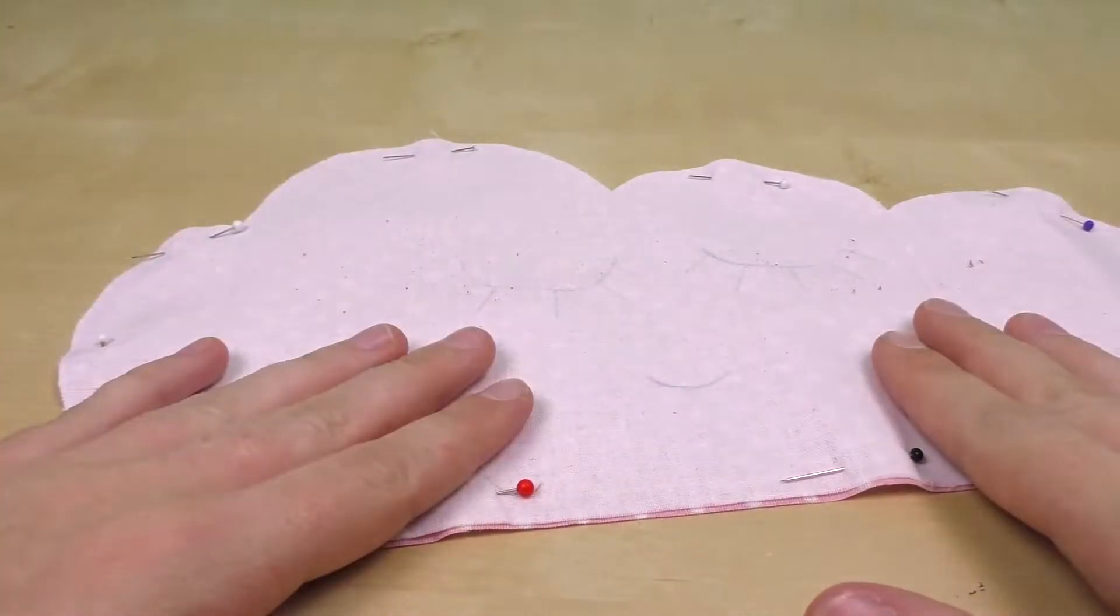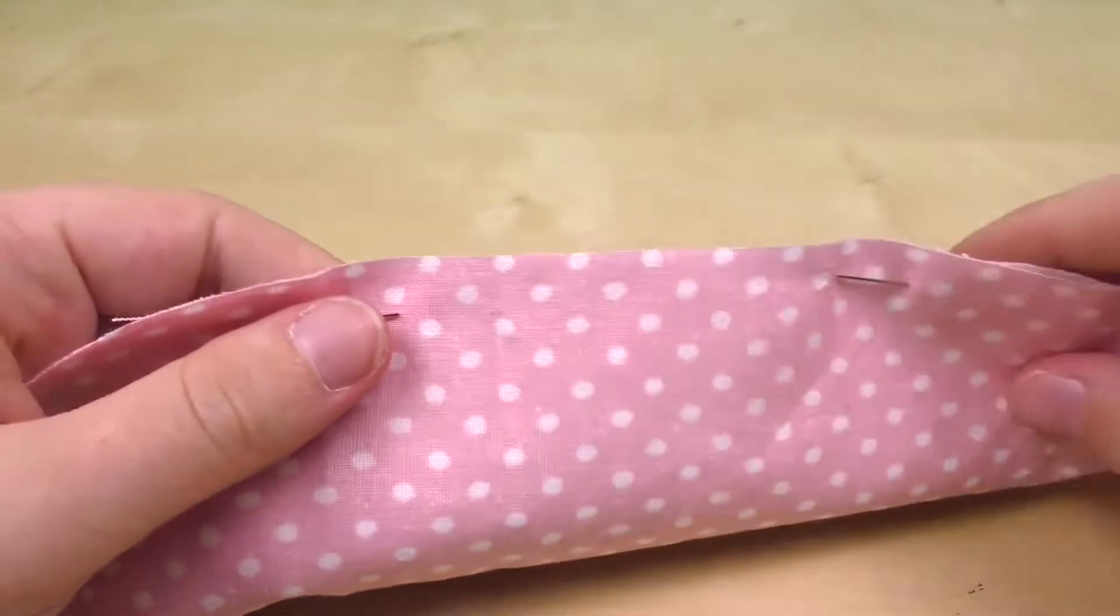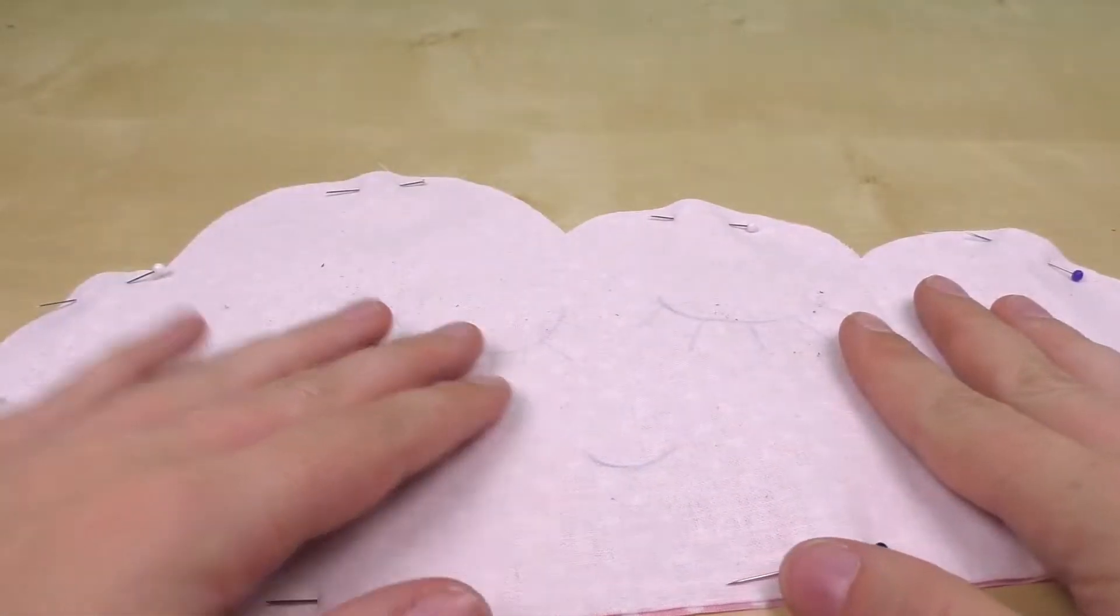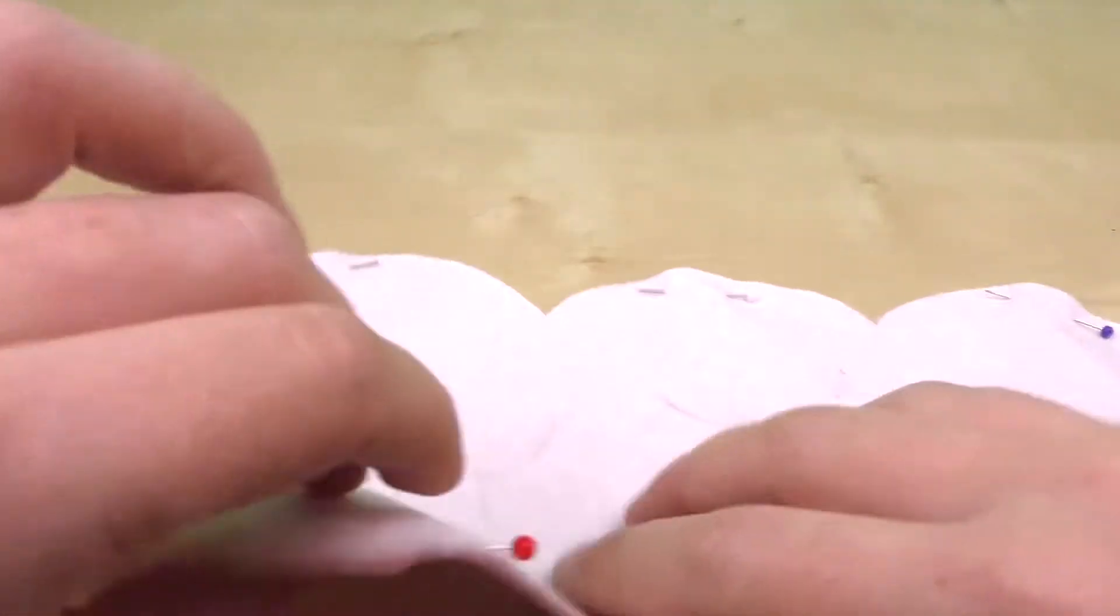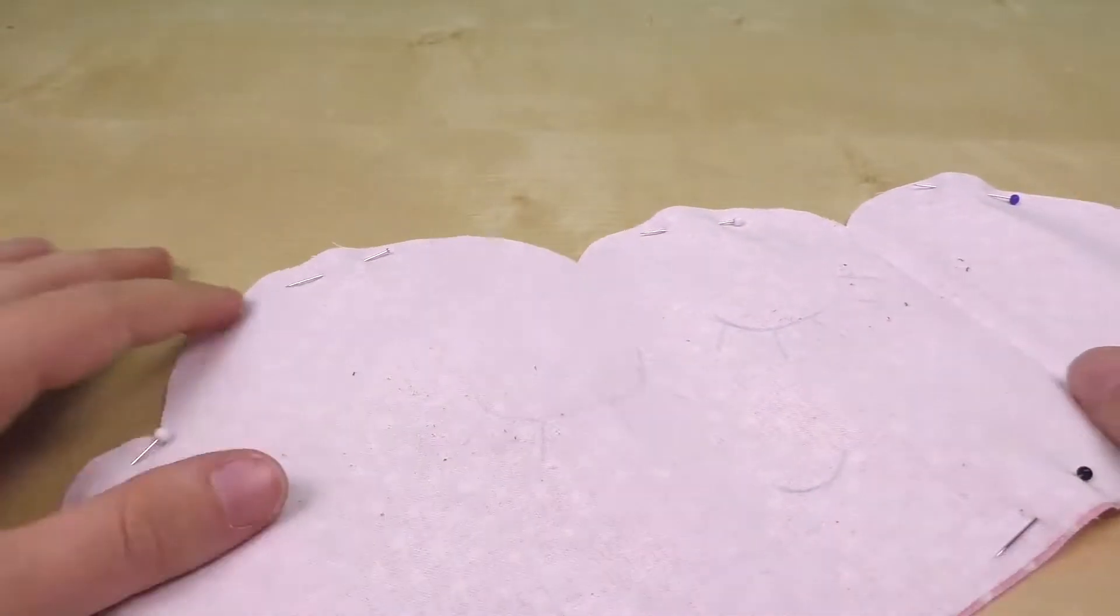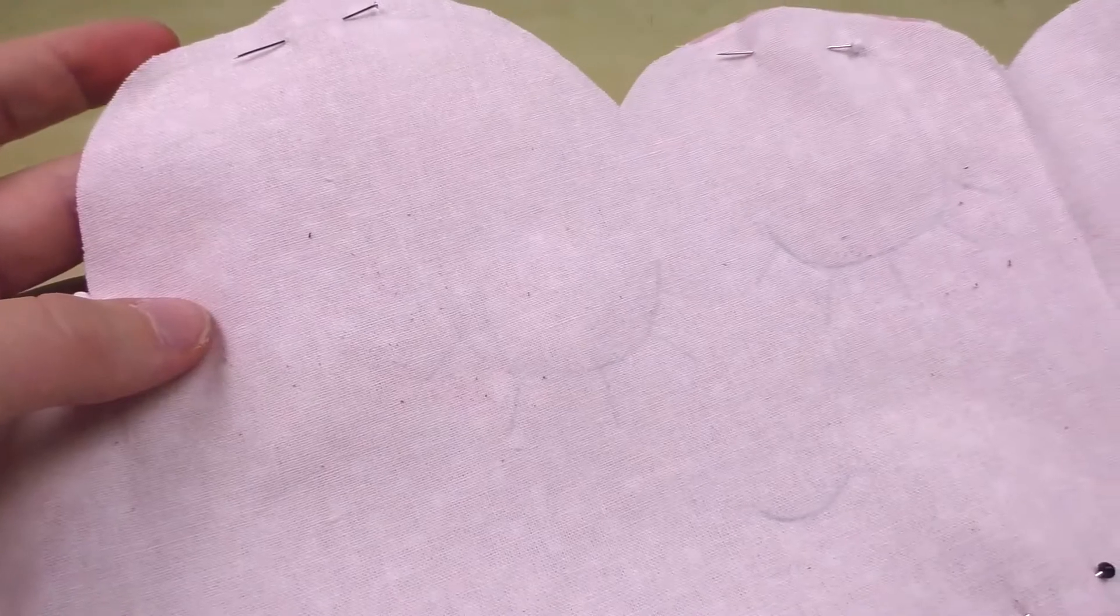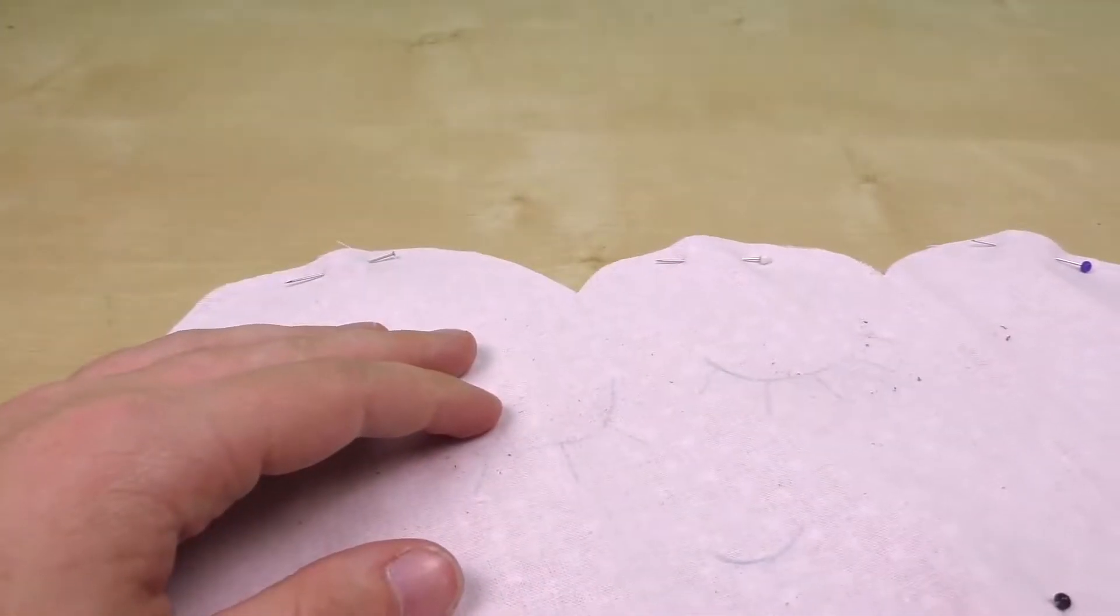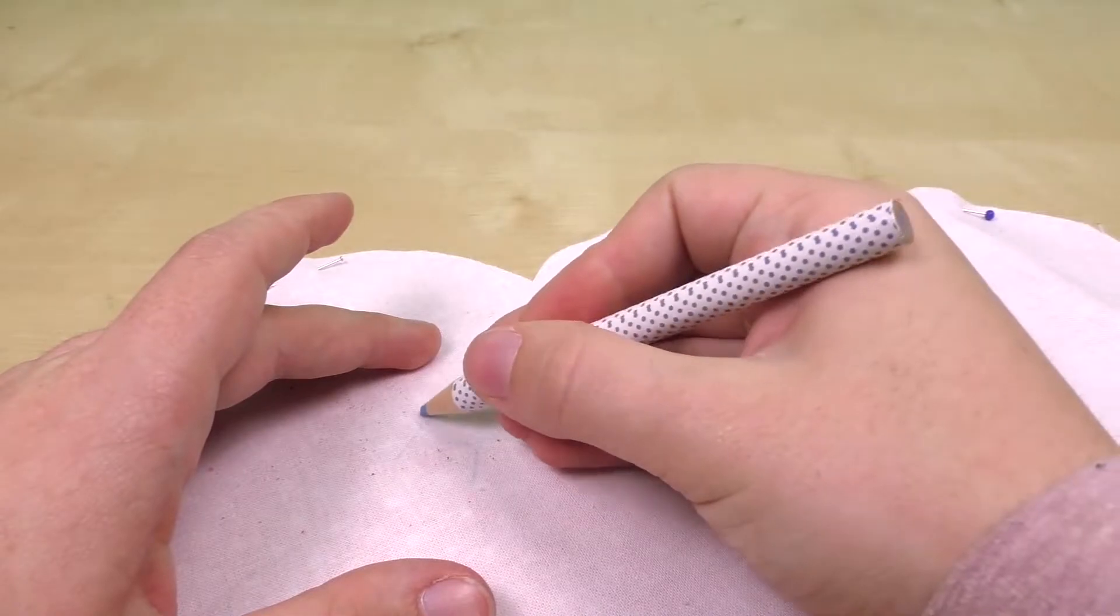You basically cut out the shape that you want. You align the front fabric and the back fabric, pin them together, and then you cut out. I want to have a little face on here so I marked that as well but on the back side. I'll make it a bit thicker so that I can see it from the other side as well.